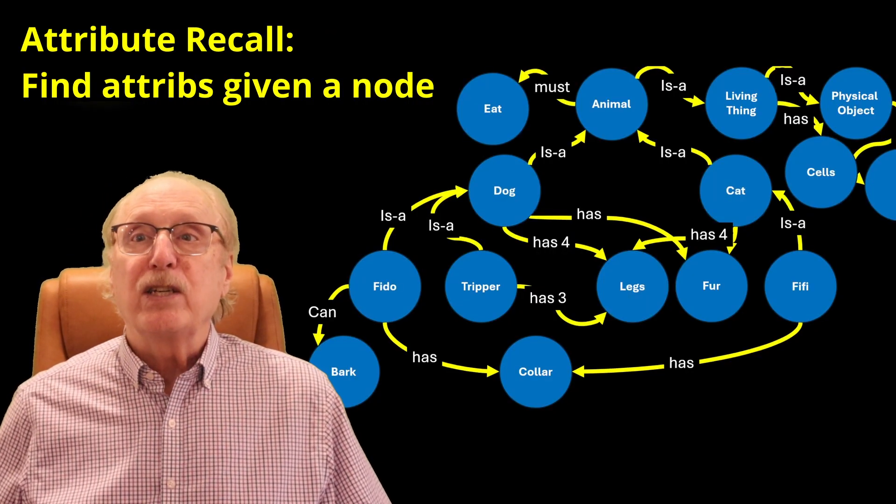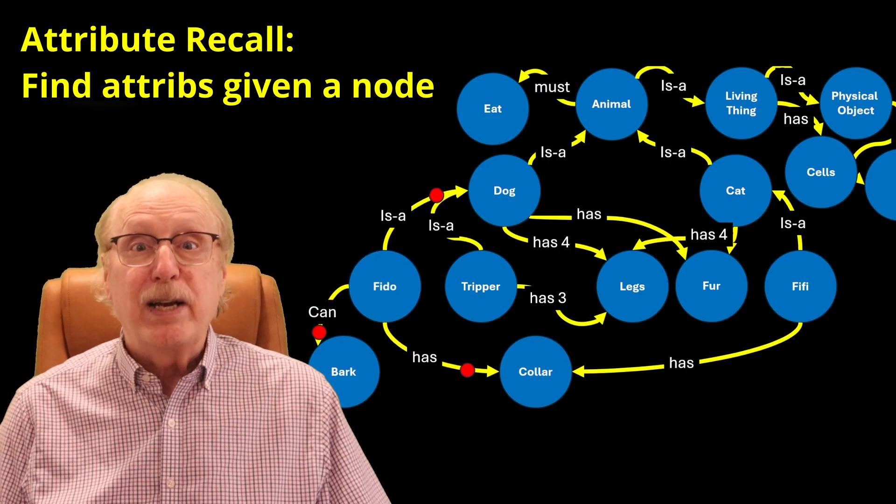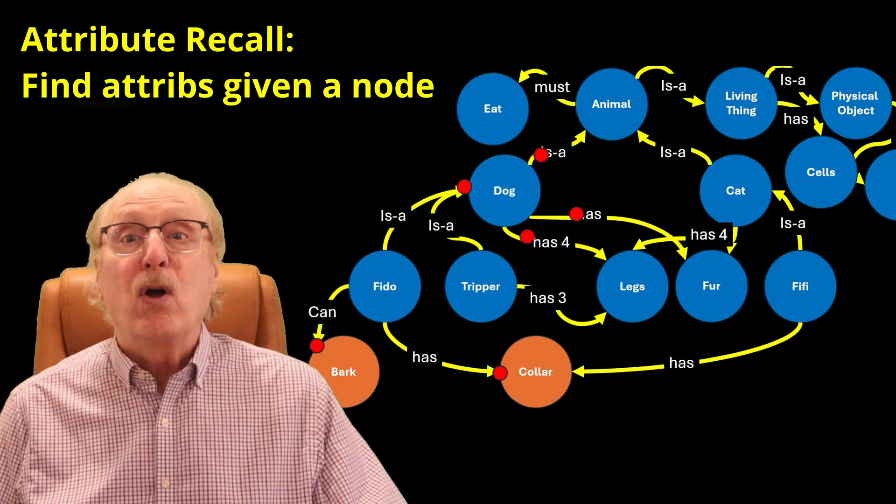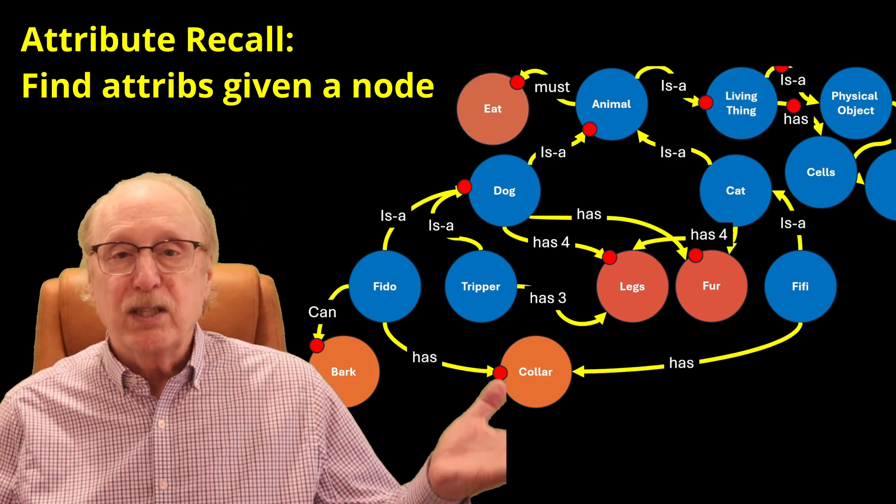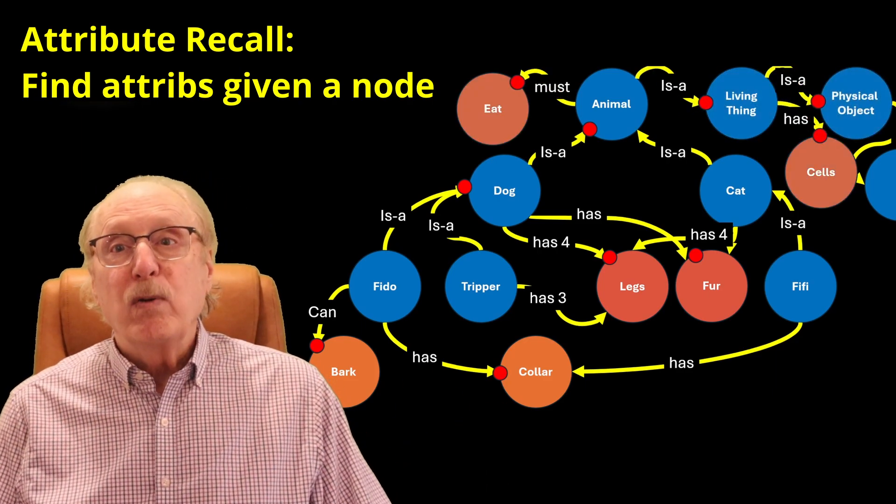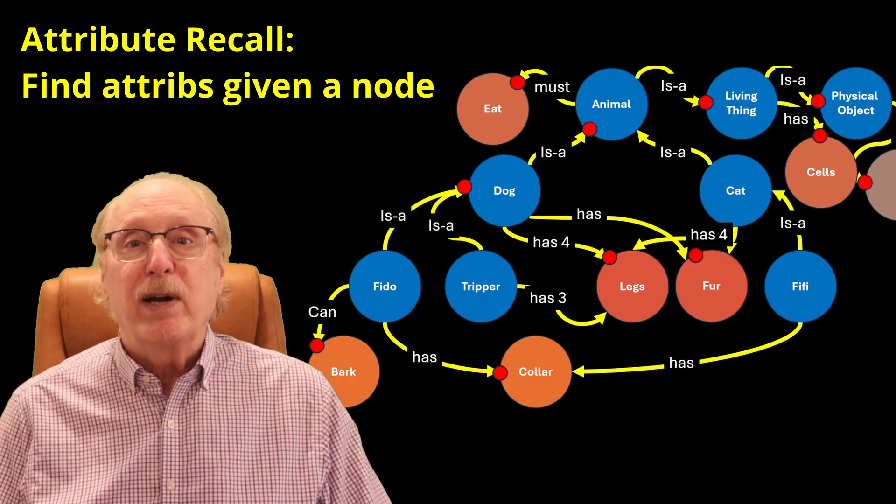Attribute recall, on the other hand, is what happens when you start with a known concept node like FIDO and want to retrieve all its related attributes: has four legs, is a mammal, can bark, etc. Both of these searches are complicated by the fact that attributes may be inherited within the graph.